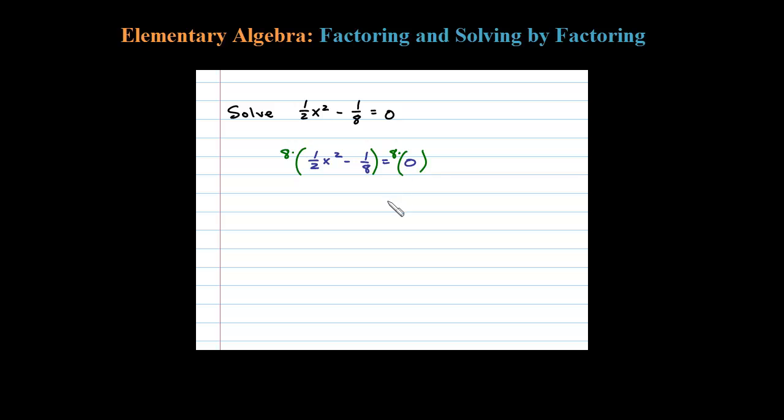Notice here on the right side I'll have 8 times 0 which is just 0. But on the left side, when I distribute, 1 half times 8 is 4x squared, and then distributing further minus 8 times 1 over 8...